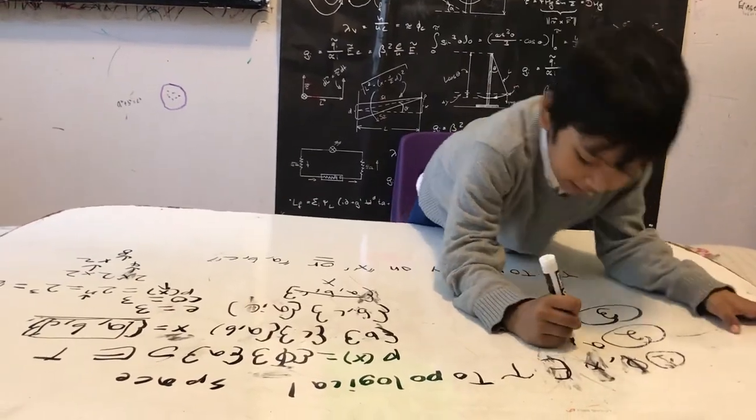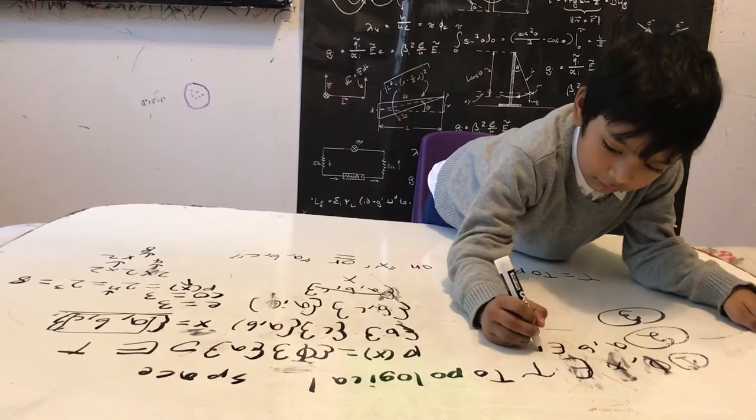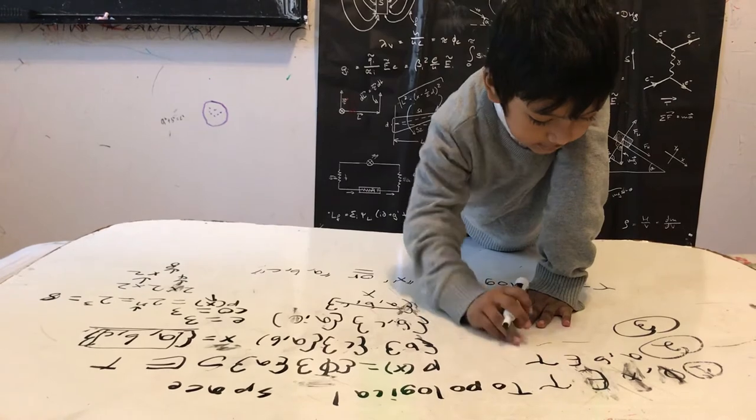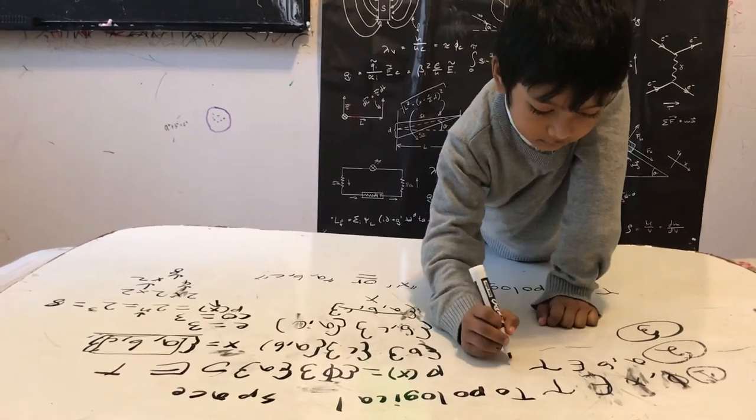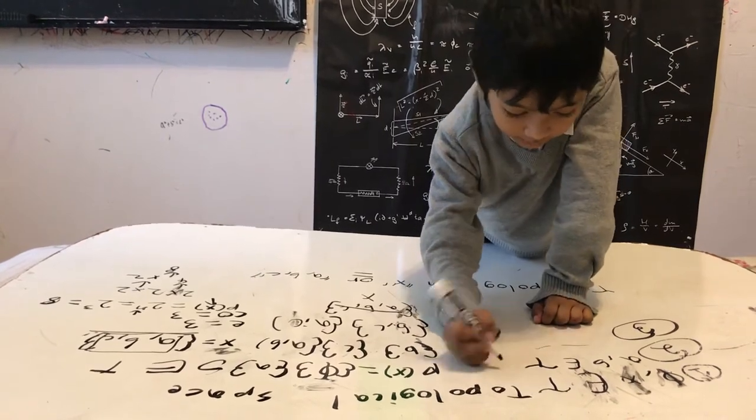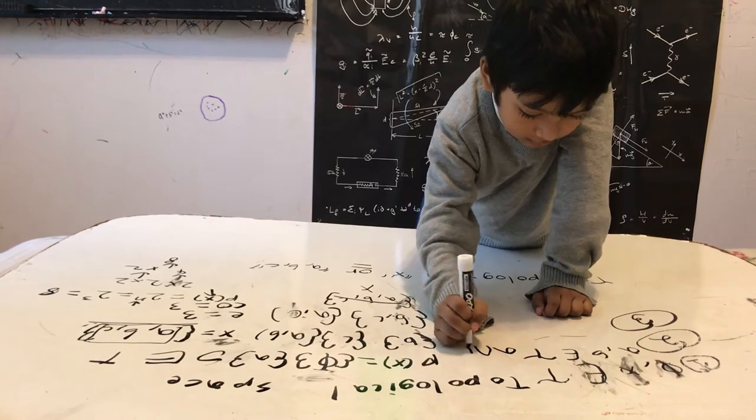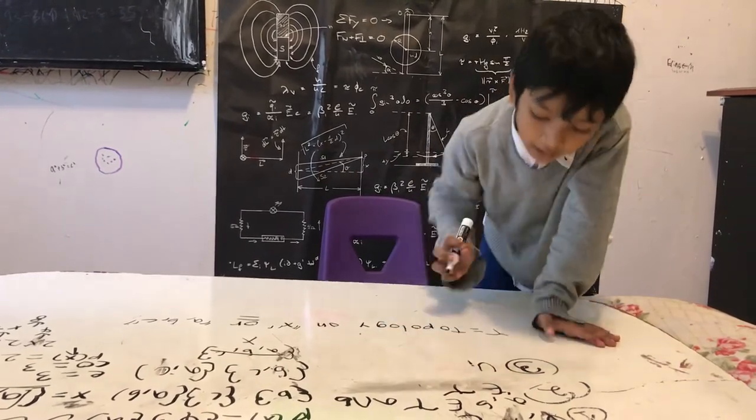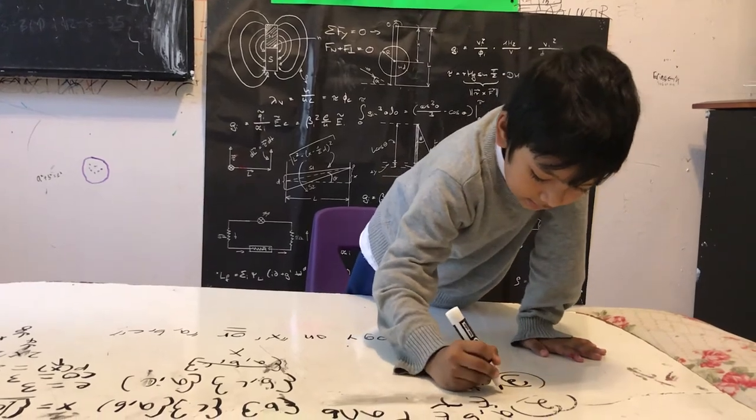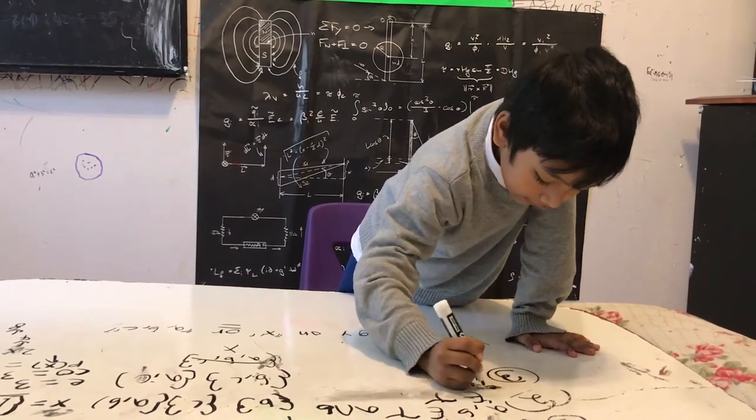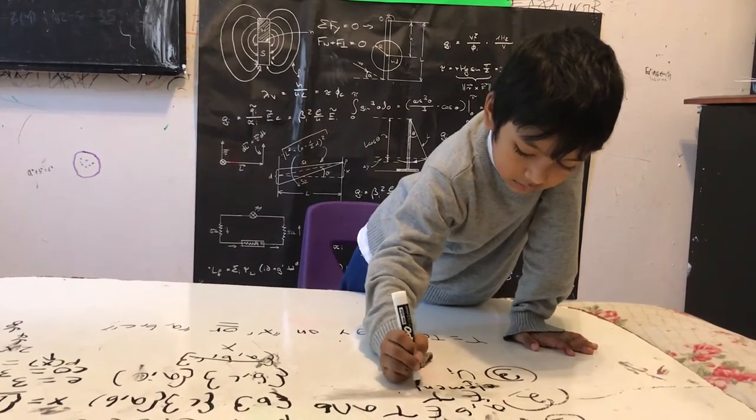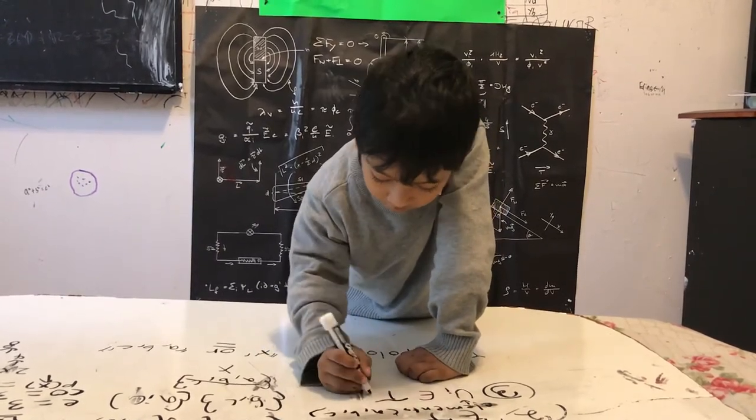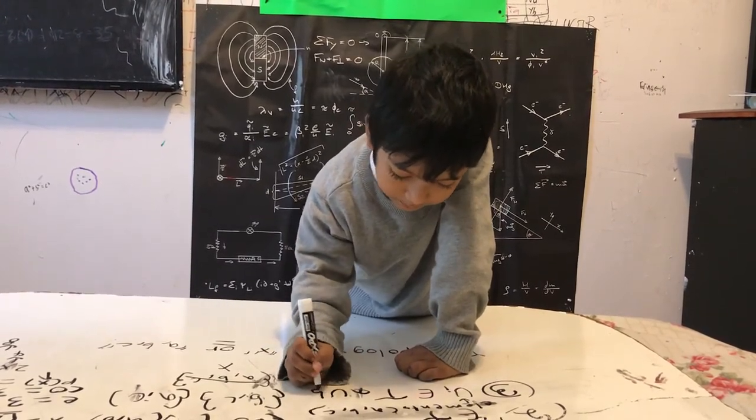If A and B are in tau, then the intersection of A, B are in the tau. So if every element, these are the elements, then the union must be, the union, for example, the union of A and B must be in tau.